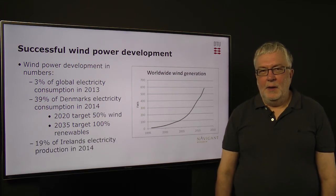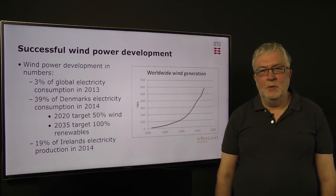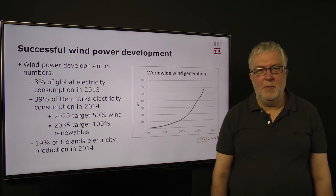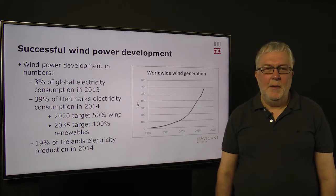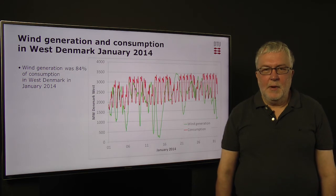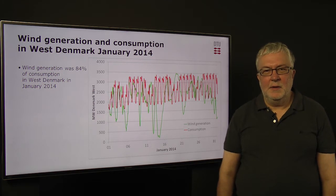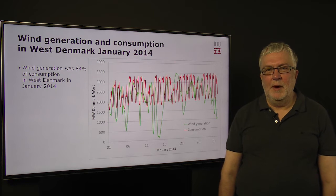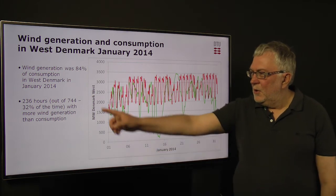Now, these are very high numbers, but actually also the wind power development in Ireland is very impressive, because Ireland is not like Denmark strongly interconnected to neighboring countries, which makes it even more impressive that they can today produce 19% of the total electricity consumption on the island from wind power. This graph shows the case in January last year, where there was another record with 84% of the electricity during that month supplied from wind power. And what we see is that this corresponds to 236 hours or 32% of the time.